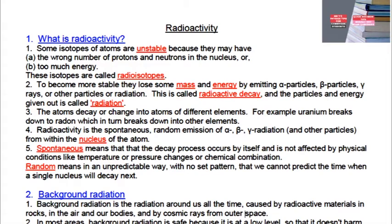In this video we are going to look at radioactivity. Some isotopes of atoms are unstable because they may have the wrong number of protons and neutrons in the nucleus, or too much energy. When we say the wrong number of protons and neutrons, we mean that the number of protons and neutrons does not balance, causing instability within the nucleus. These isotopes are called radioisotopes.